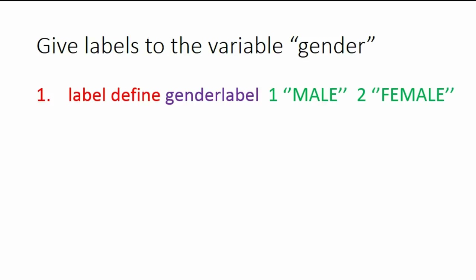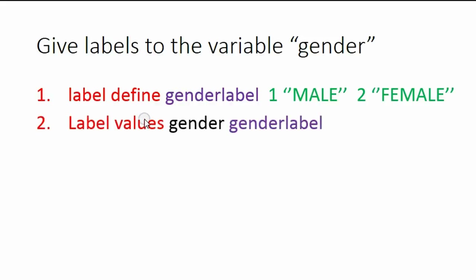The second line of code is very simple. You type in 'label values', which tells Stata you're going to apply the label you created to a particular variable. Then type in the name of the variable that you're using and the label that you're putting on. So you type 'label values', then 'gender' because that's the variable that will get the label, then 'genderlabel', which is the label that you're putting on.